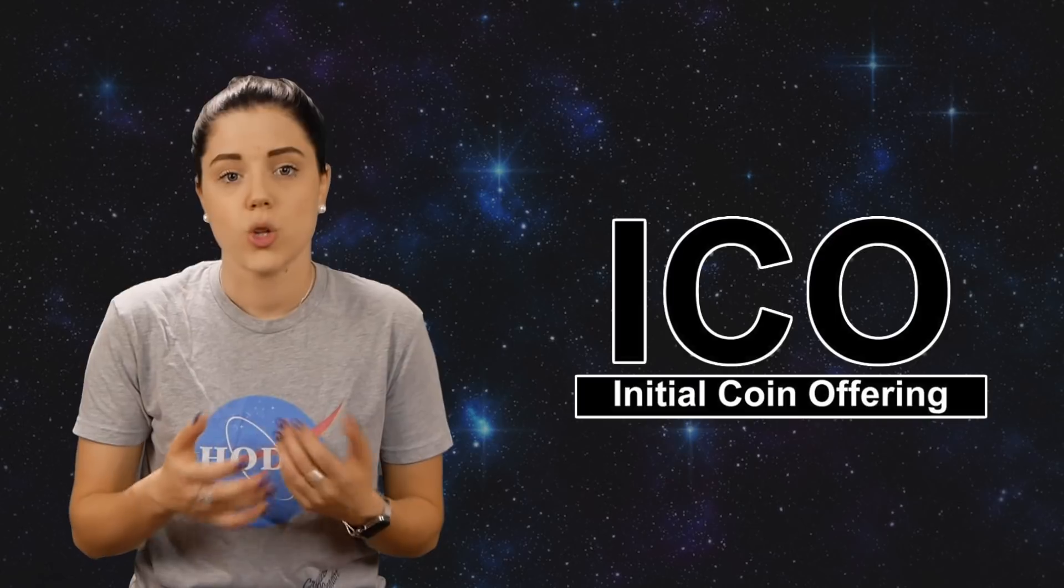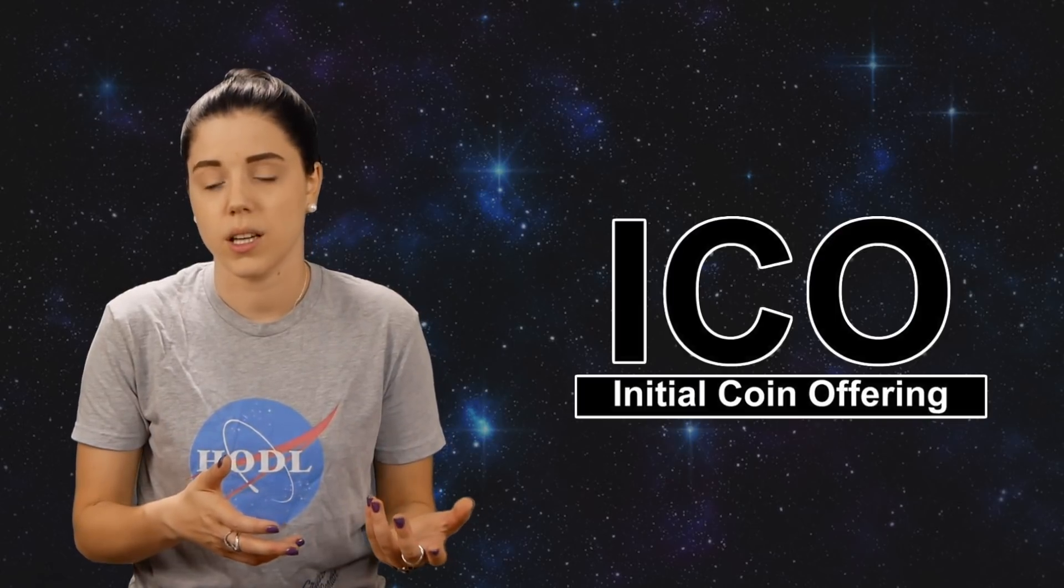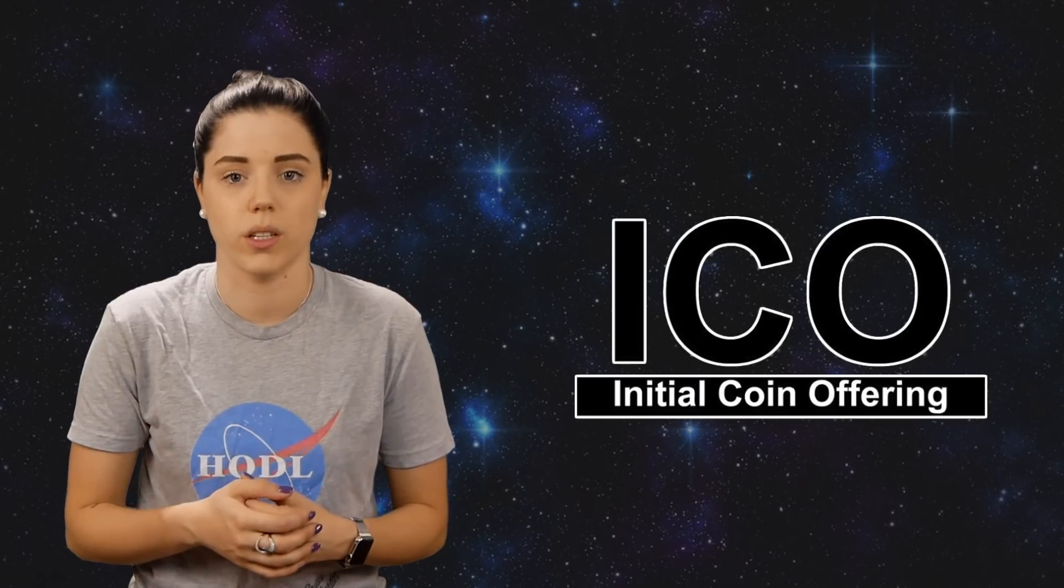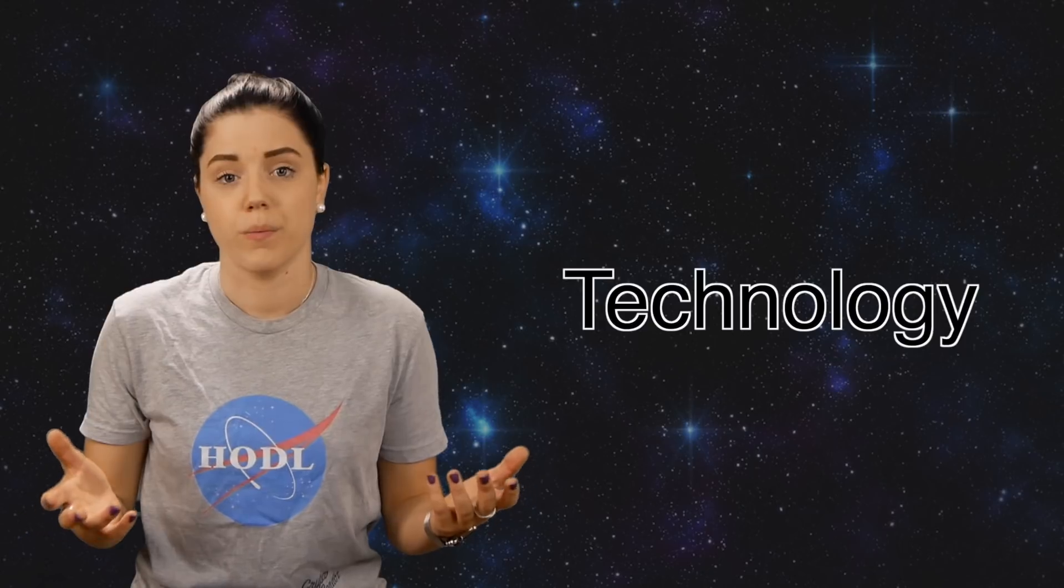There will be a one-year token lockup. ICO participants will receive 25% of the token prior to it being listed on an exchange, 25% three months after the listing, and then in increments of 25% every three months until it's all distributed. They have a soft cap of 8,000 ETH and a hard cap of 16,000 ETH.